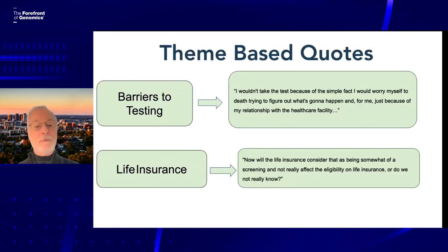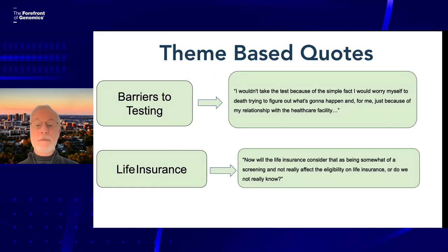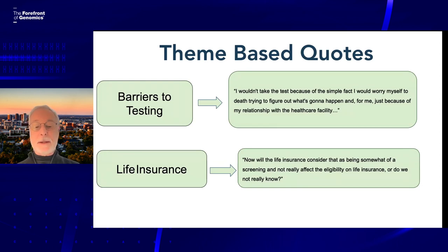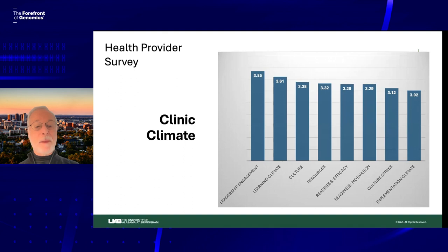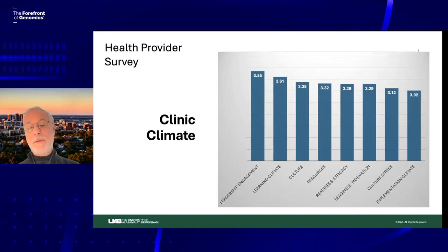A few quotes from participants on barriers to testing: one person said they wouldn't take the test because they'd worry themselves to death because of it. There were also expected concerns about life insurance — wondering whether this would affect eligibility. As for providers, Larry Harold from the implementation science group at UAB did a set of interviews and surveys with the primary care physicians to get a sense of how they viewed genomic screening. Looking at the climate of the clinic — how stressful things are, whether there are adequate resources — the most important factor turned out to be leadership engagement.